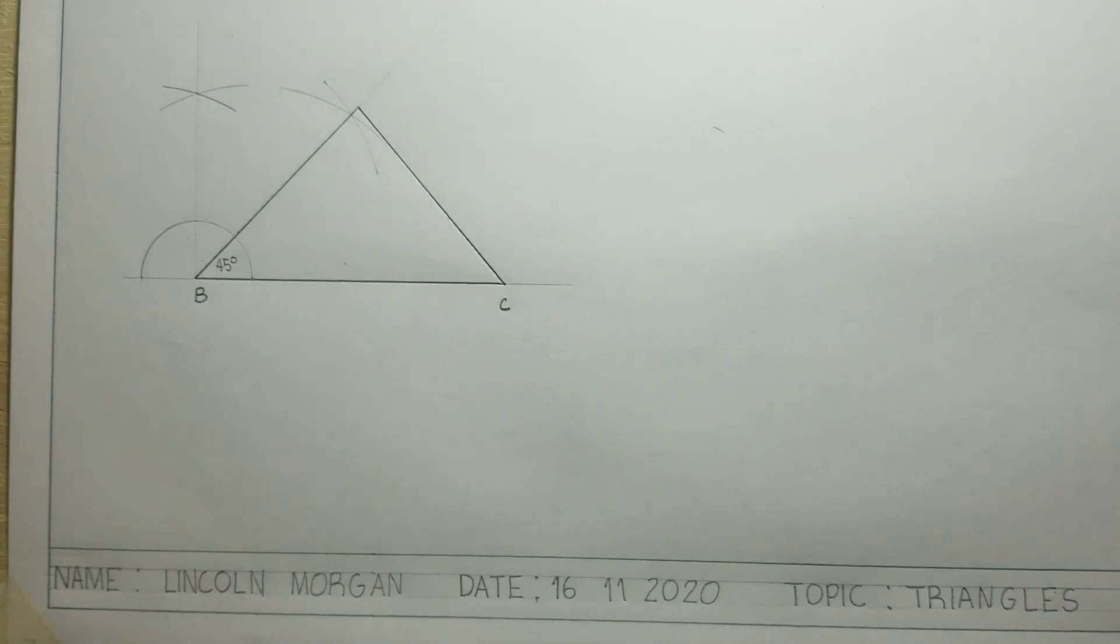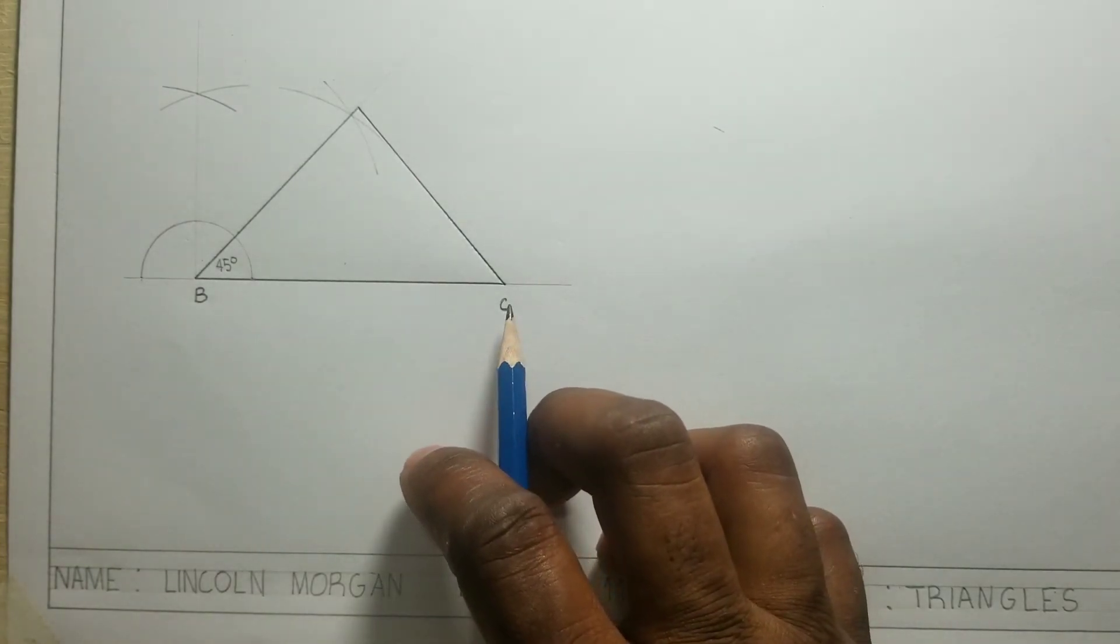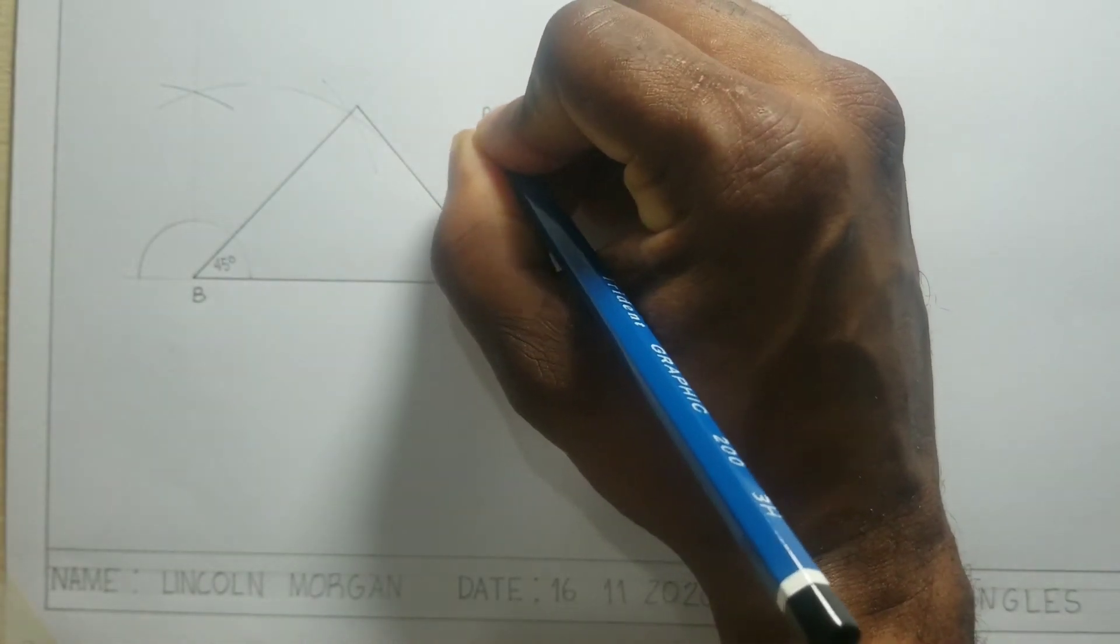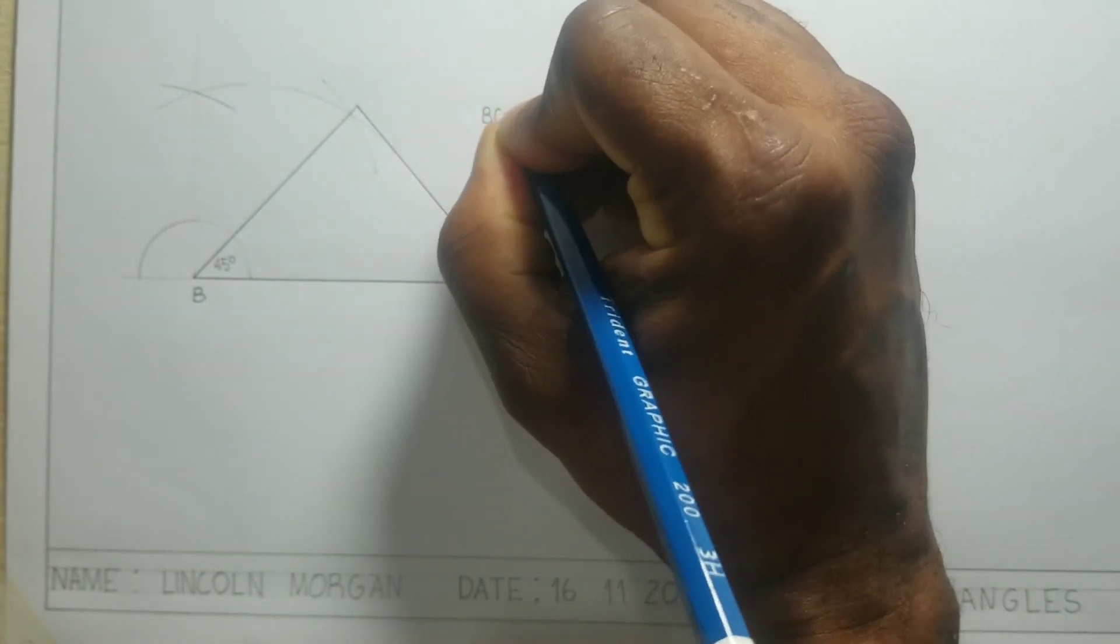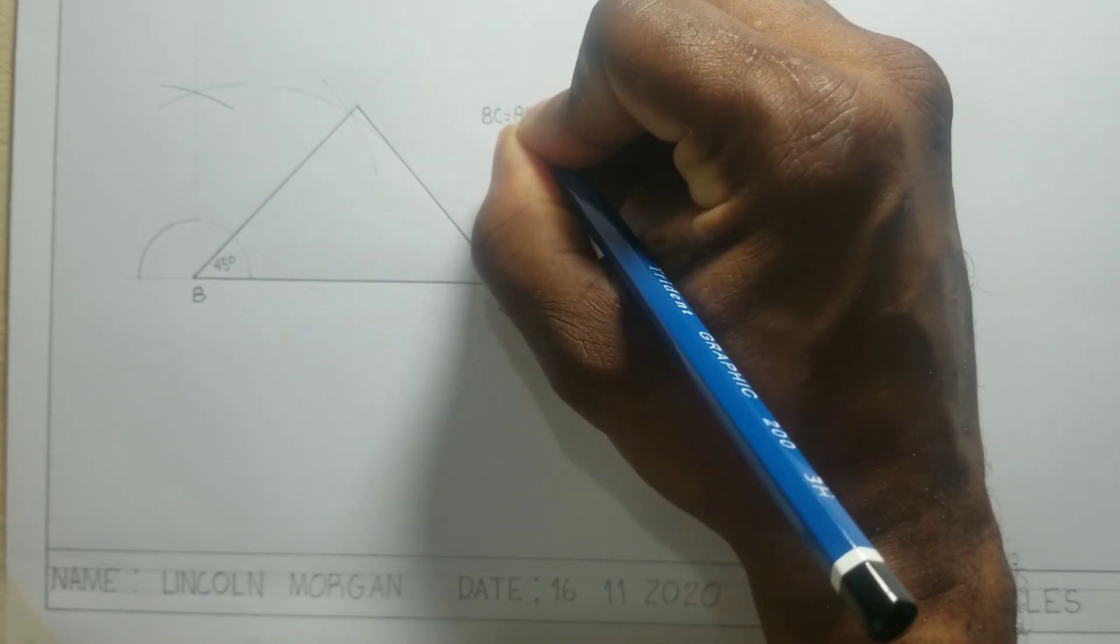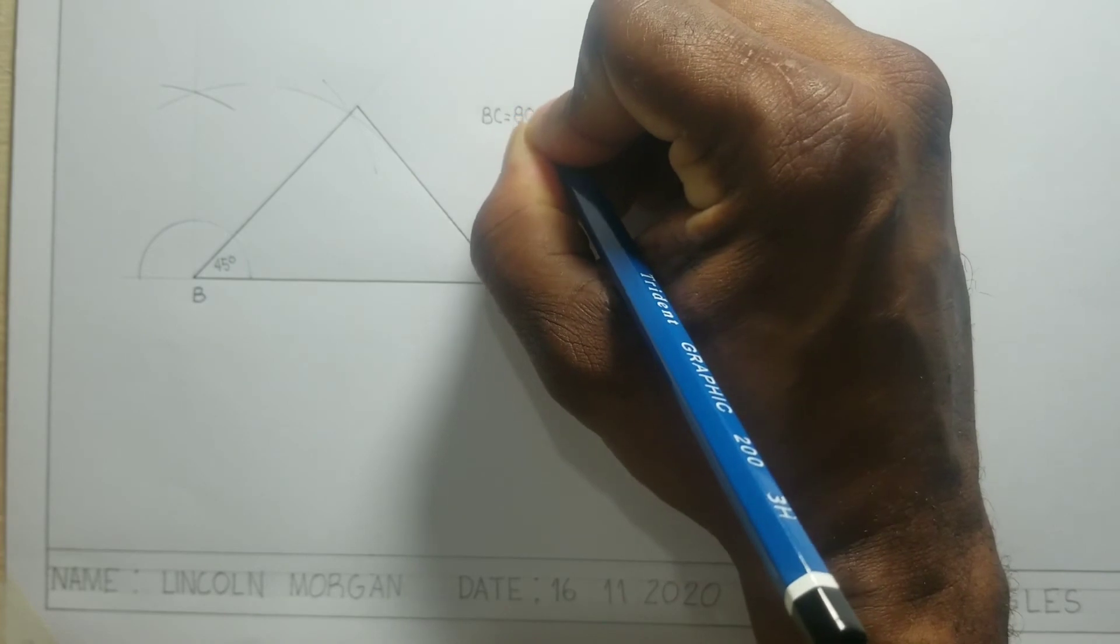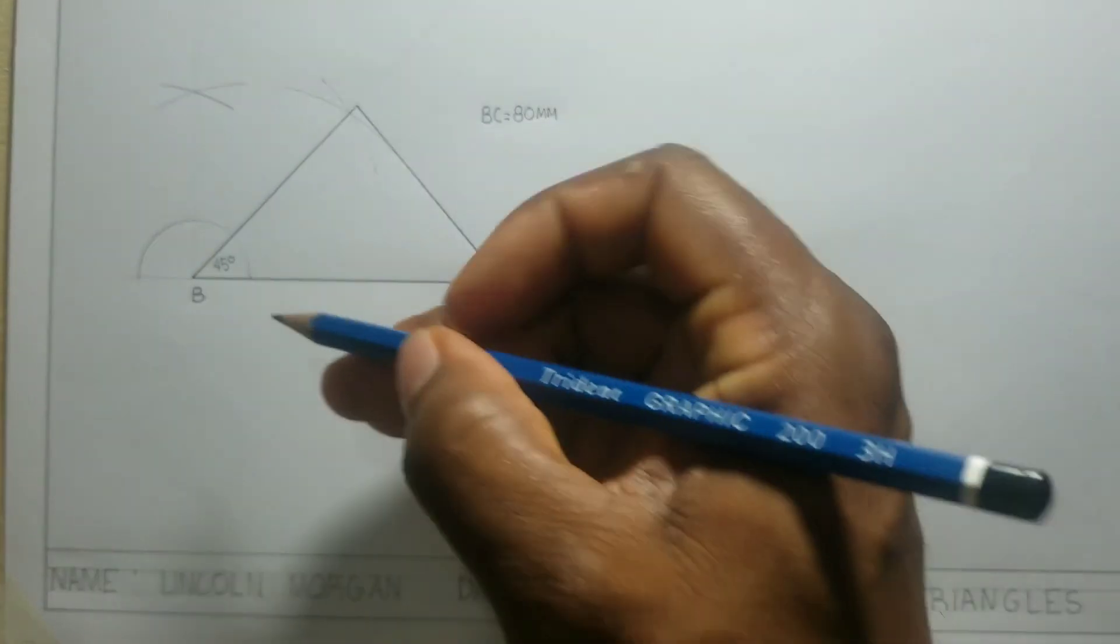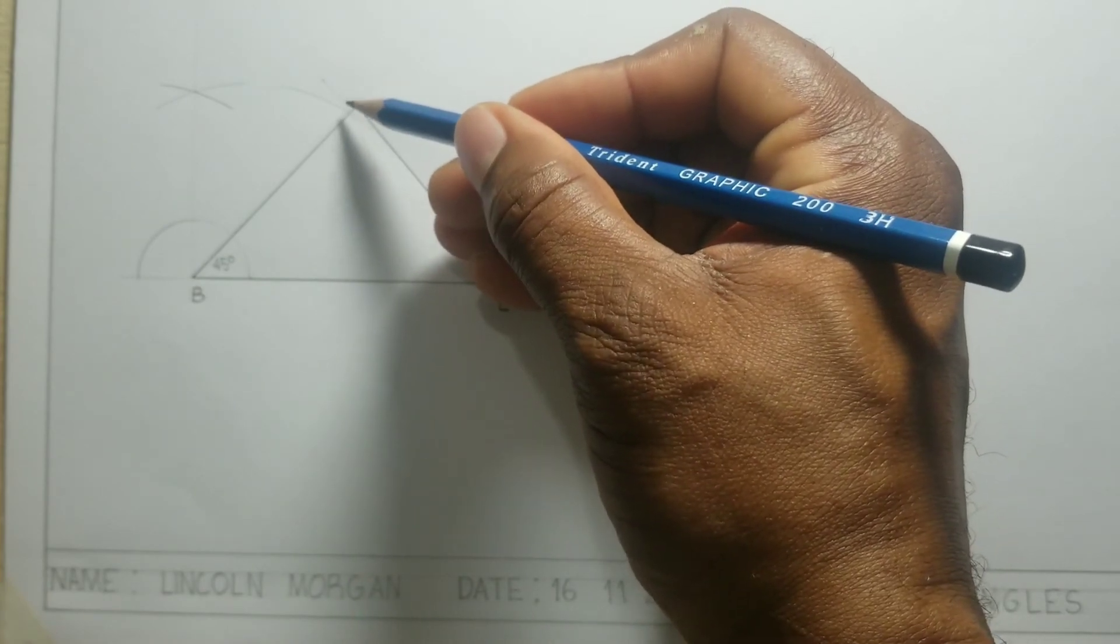So BC is 80 millimeters, and BA is 60 millimeters.